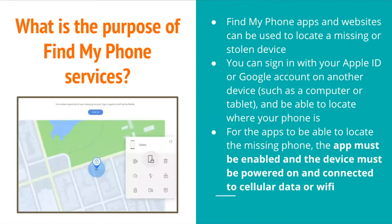What is the purpose of Find My Phone services? Find My Phone apps and websites can be used to locate a missing or stolen device. You can sign in with your Apple ID or Google account on another device, such as a computer or tablet, and be able to locate where your phone is. For the apps to locate the missing phone, the app must be enabled and the device must be powered on and connected to cellular data or Wi-Fi.